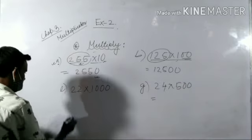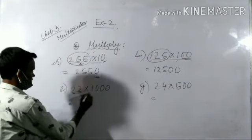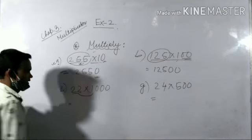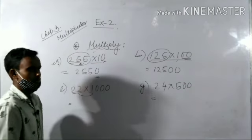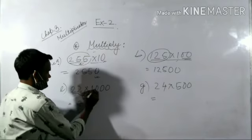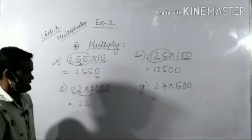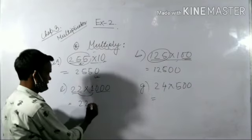Now look at question number e. In e, what is given? 22 is given. And here is what? If you multiply 22 and 1, it will be 22. So write 22. Here, 1 is given. After 1, how many zeros are left? Three zeros are left, so just write three zeros. 22000 is your answer.